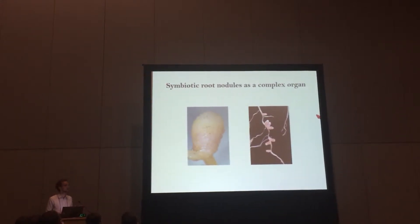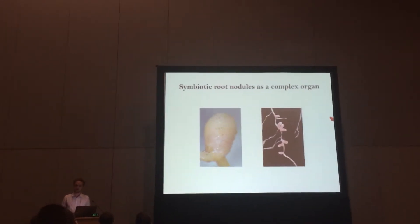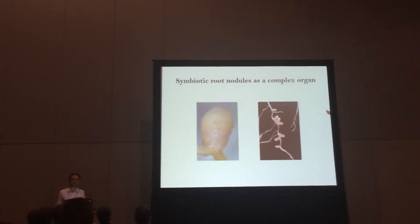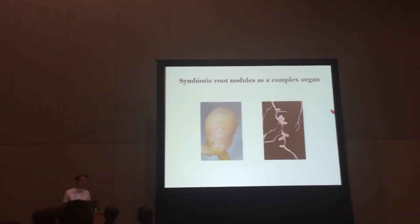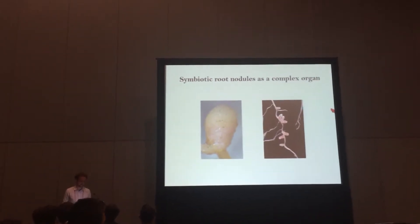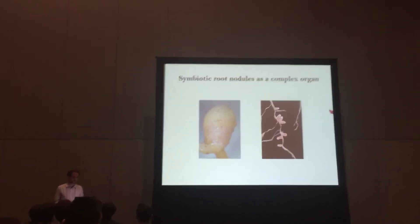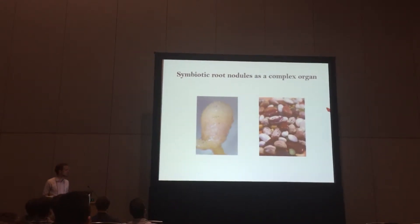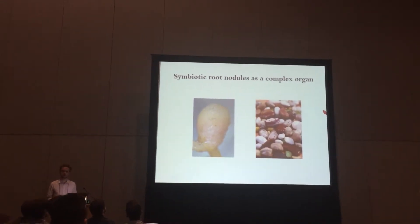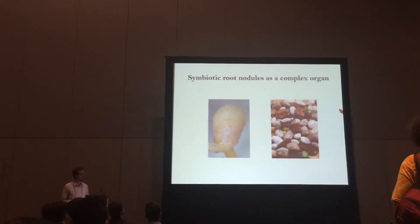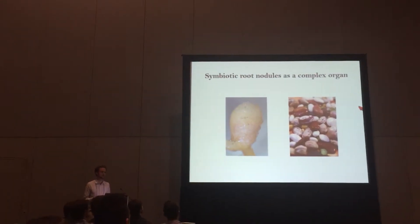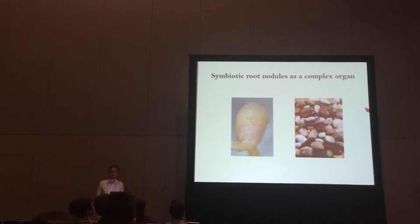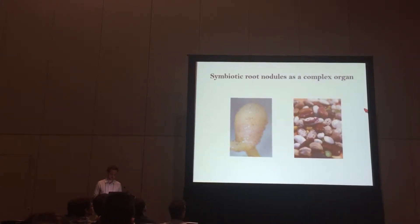In those root nodules, symbiotic bacteria live. The plant provides the nodule and the bacteria with carbon, and in return the bacteria provide the plant with nitrogen. Not only does this mutualism contain some agriculturally important species — some of the legumes — but it can also be responsible for over half of the nitrogen fixed in an ecosystem, and is key for driving nutrient cycles.